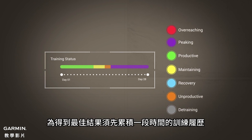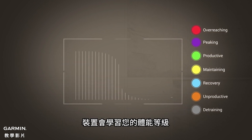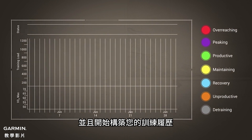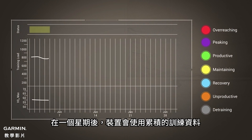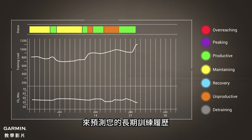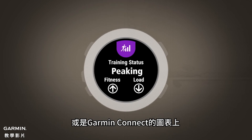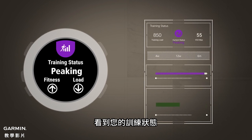Getting optimal results requires some training history. The first several days you use your device, it will be learning your fitness level and beginning to build your training history. After a week, it will use the data acquired thus far for the short-term to project your longer-term training history. By this point, you will begin to see a training status which is shown on your watch on the performance widget and graphed on Garmin Connect.